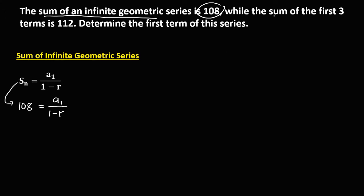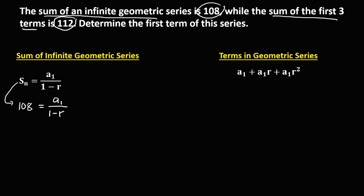The sum of the first three terms is 112, and we can write the sum of the first three terms in the geometric series. We have a sub 1, that's the first term, plus a sub 1 times r, that's the second term, plus a sub 1 times r squared, that's the third term. Since the sum of the first three terms is 112, this becomes a sub 1 plus a sub 1 times r plus a sub 1 times r squared equals 112.